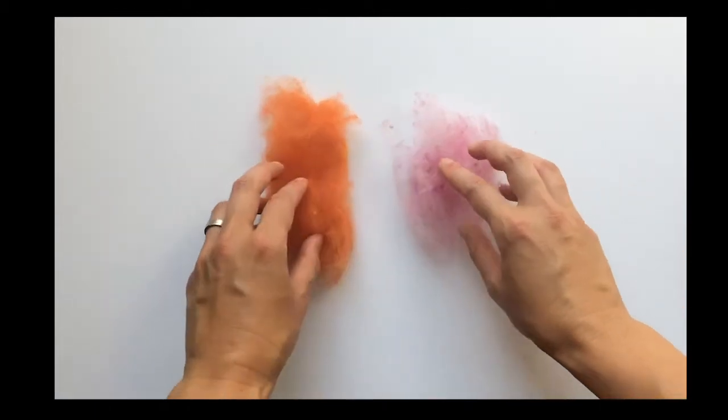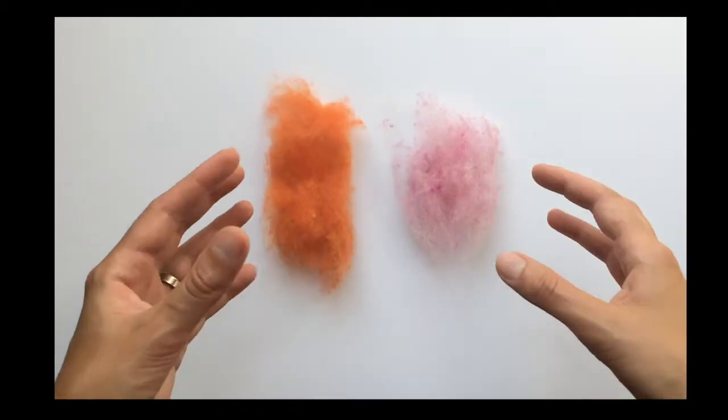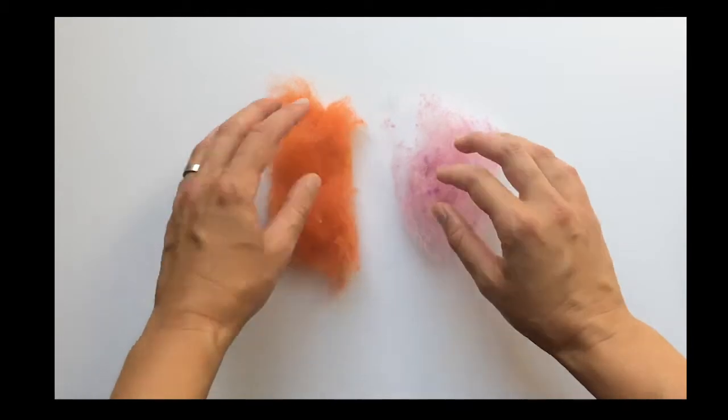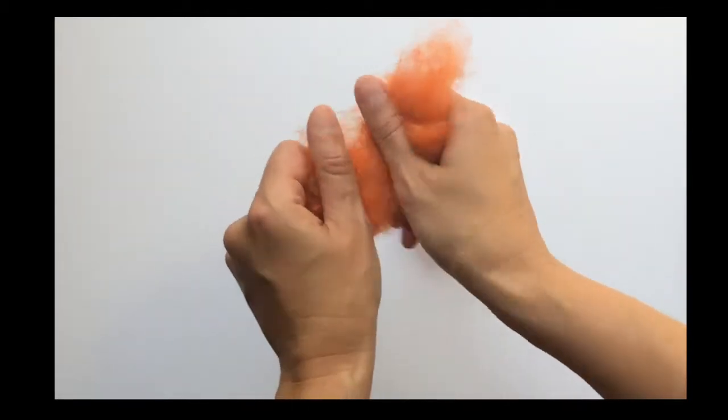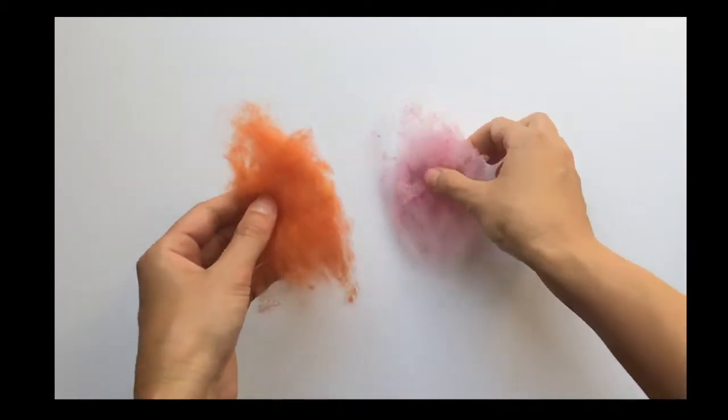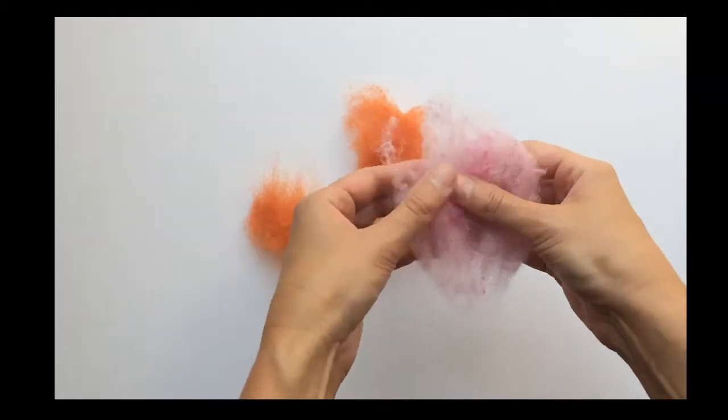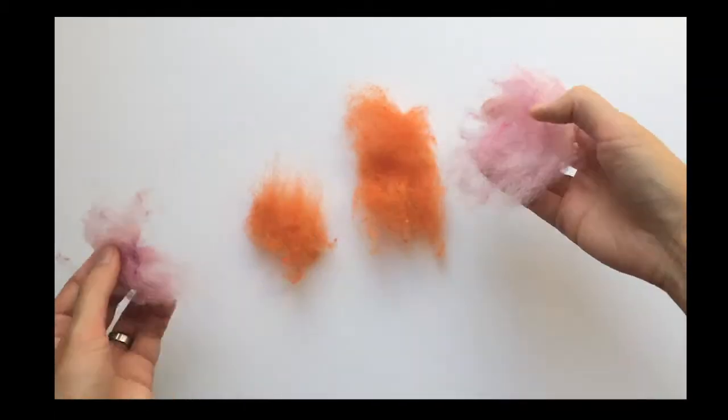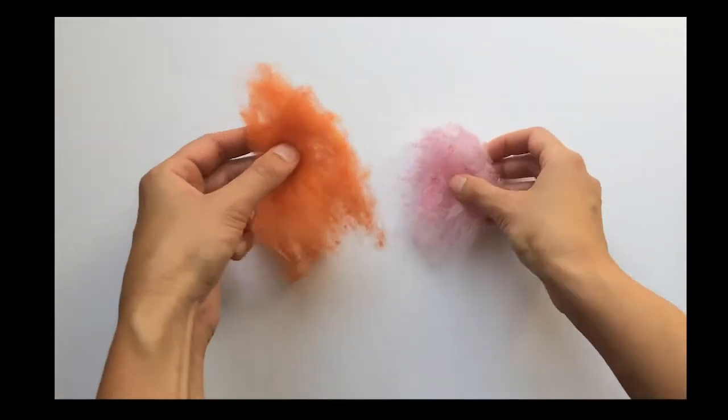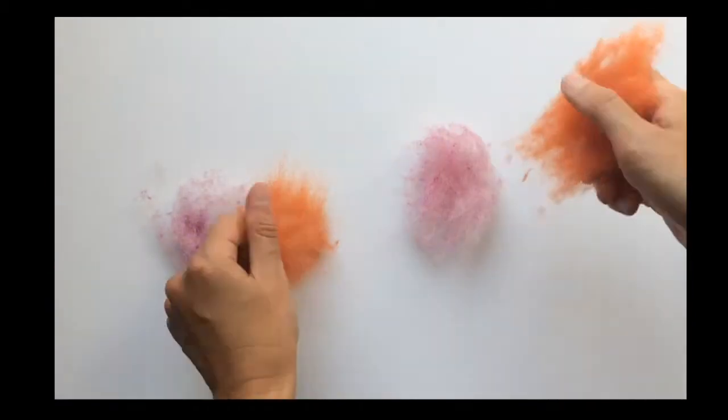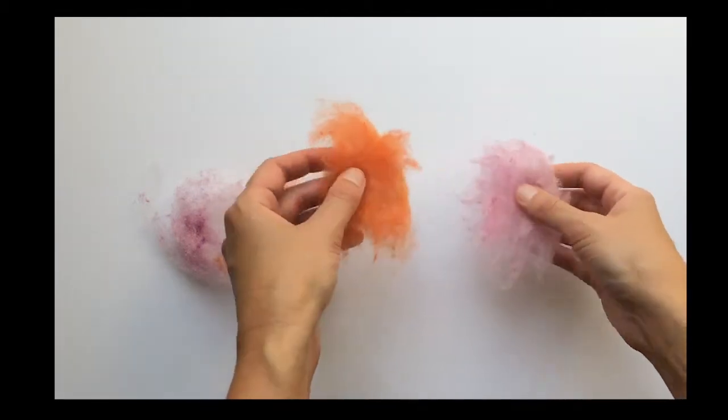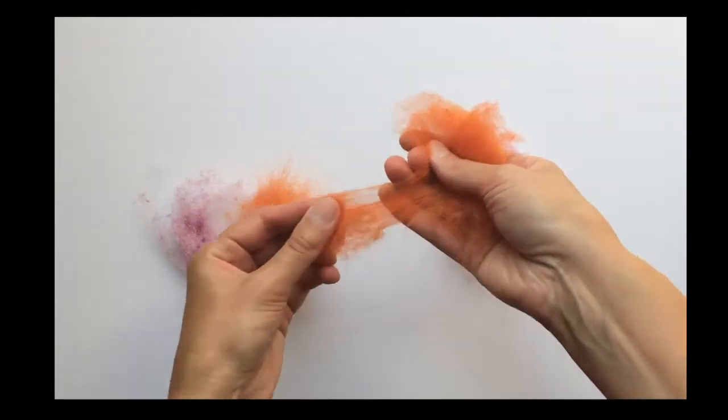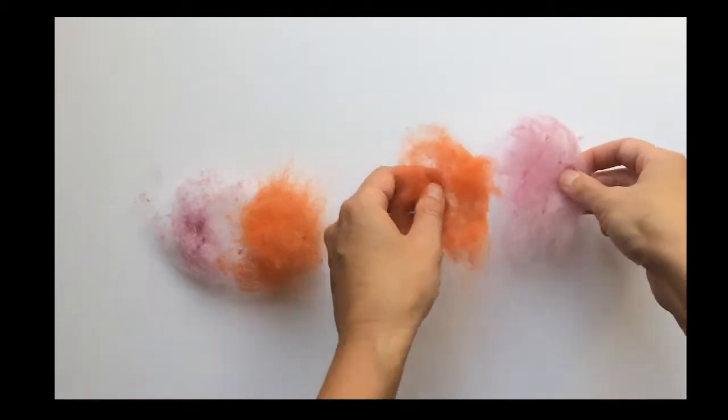So I'm going to be combining these to make a nice coral color for our heart in the next video. So what I'm going to do is just tear off the amount I want. I'm going to use about an equal amount of both colors, maybe slightly less orange. We'll do that.